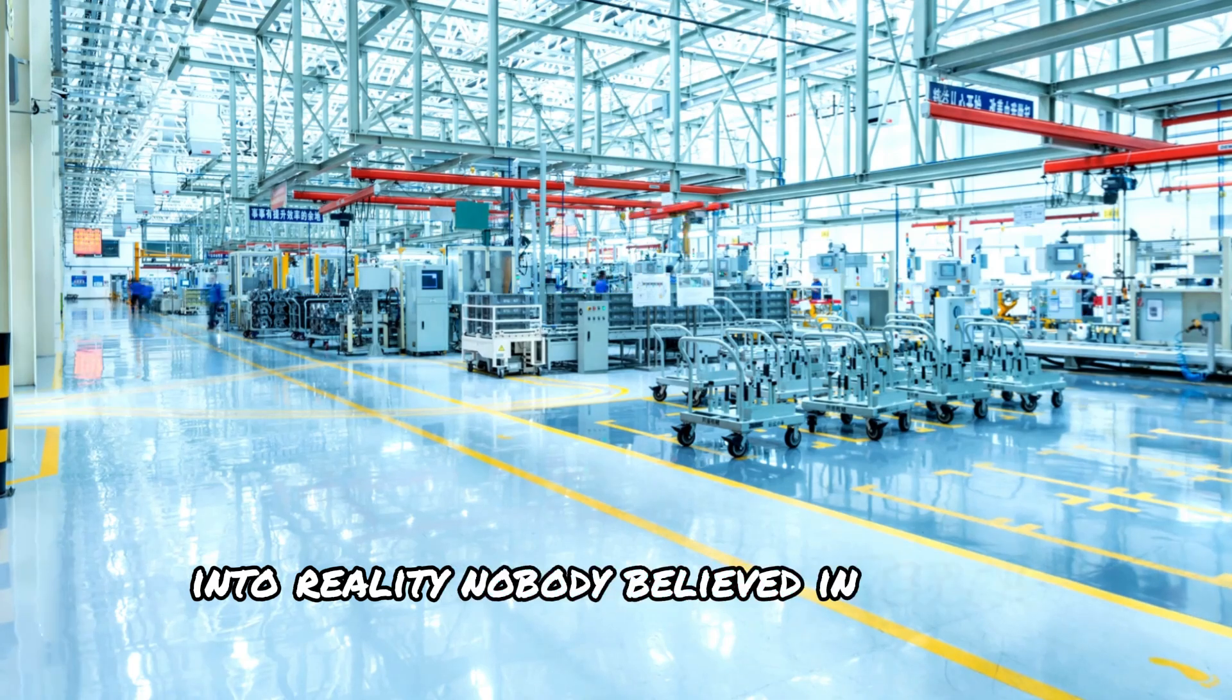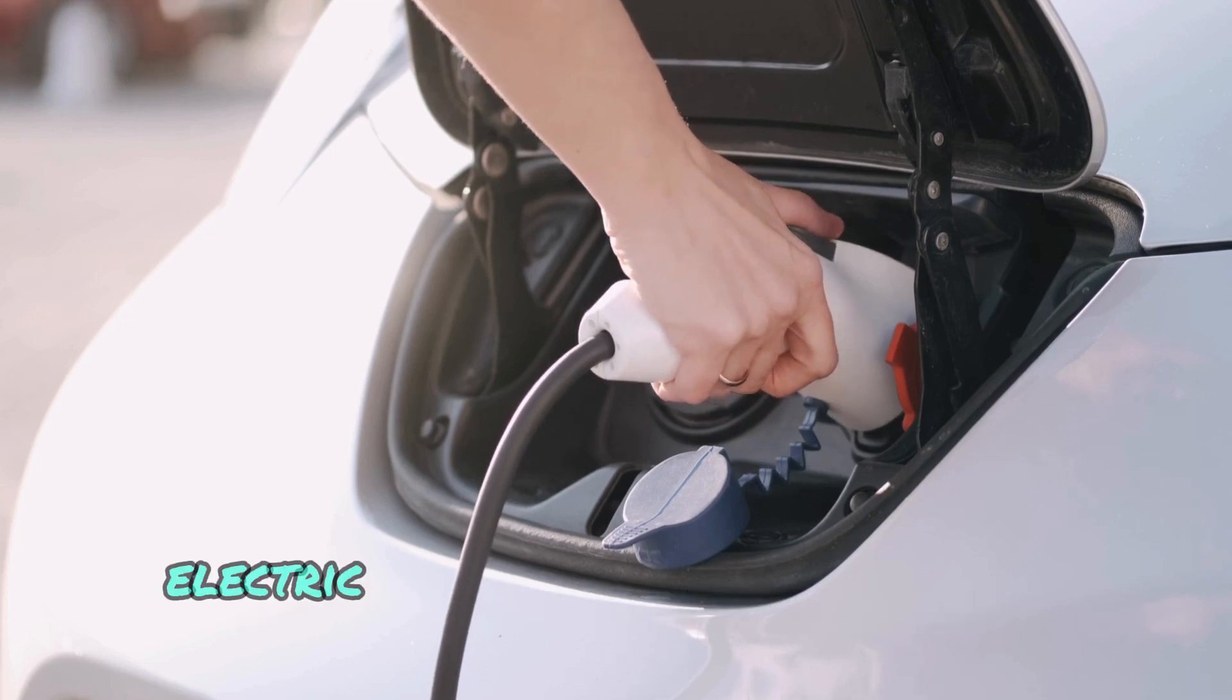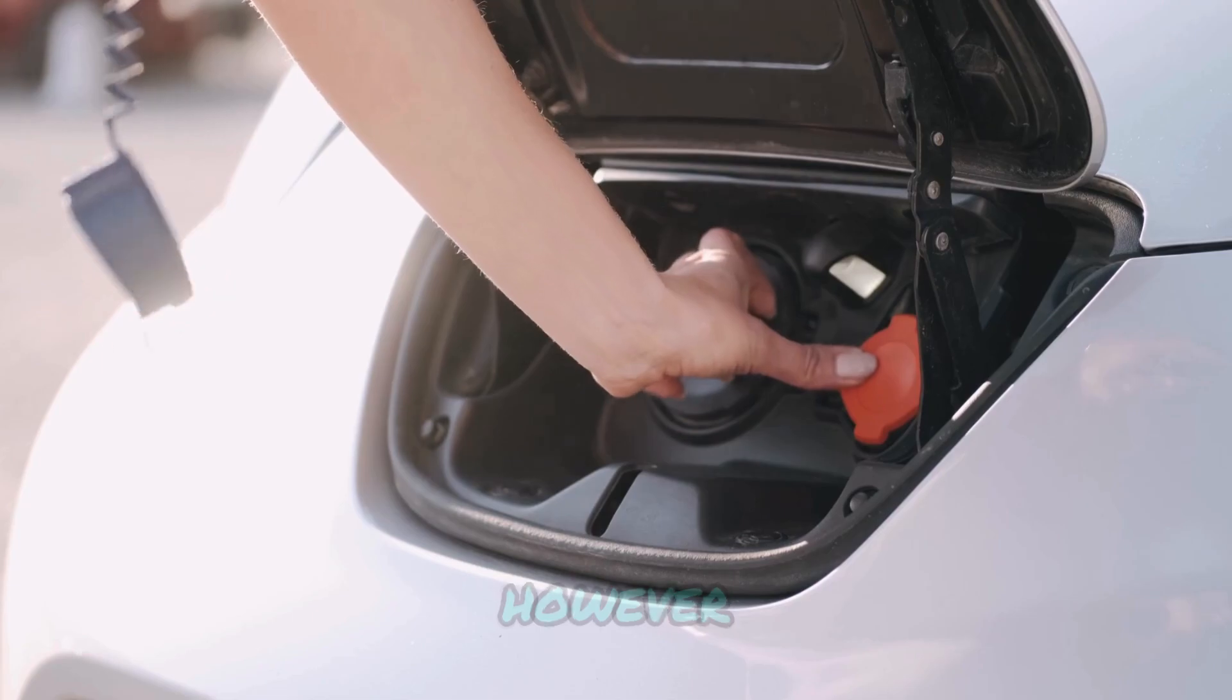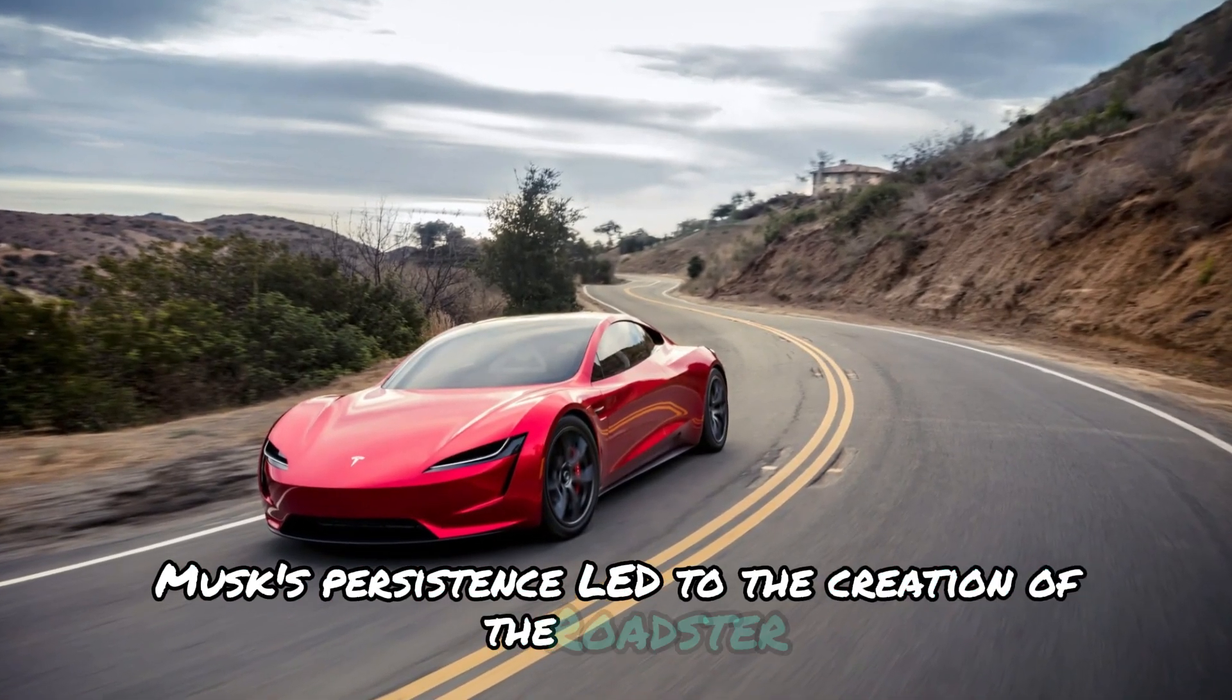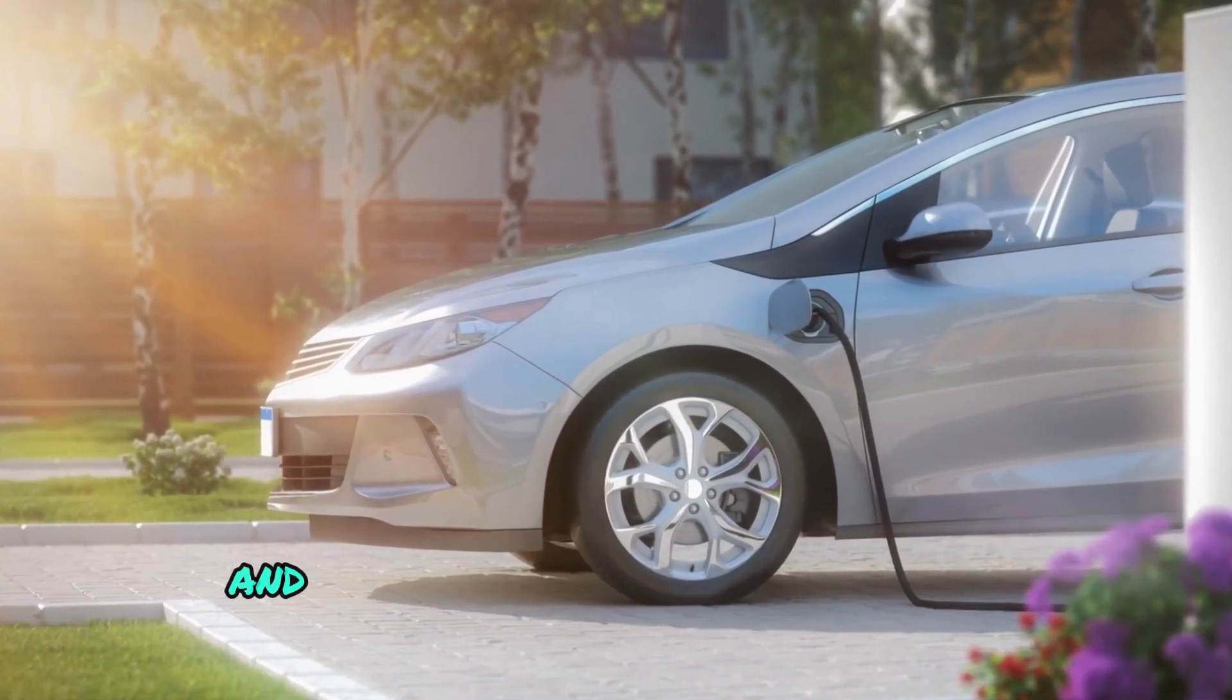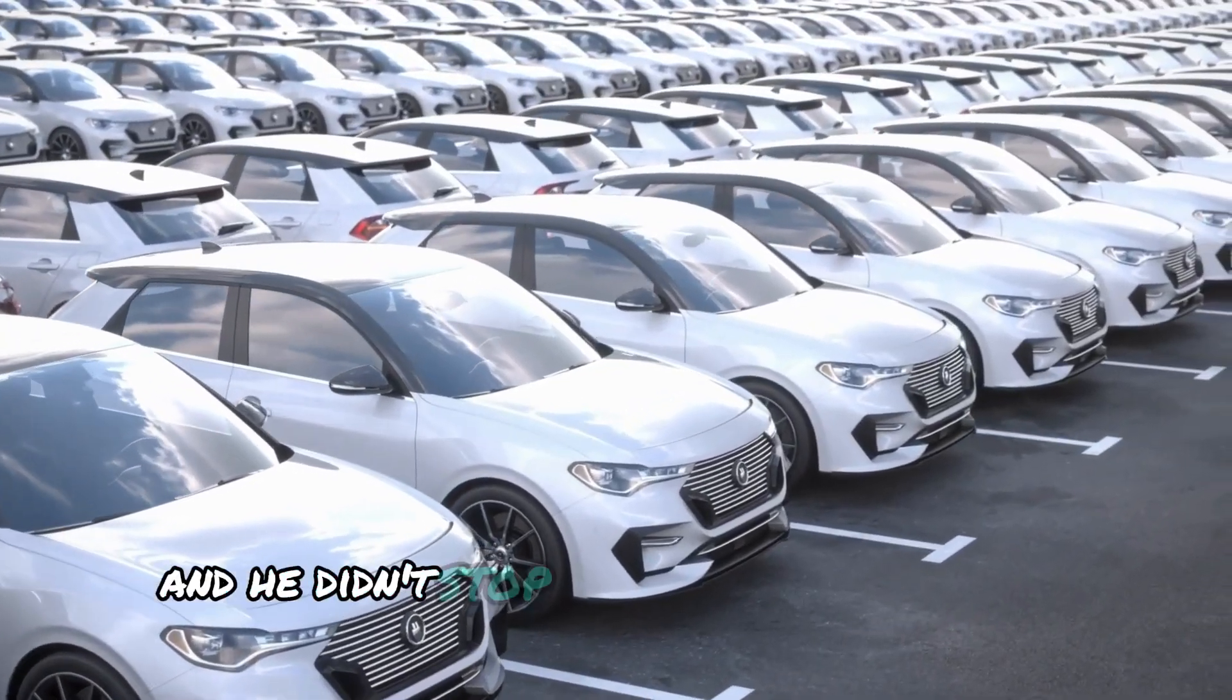Nobody believed in Tesla's vision when it started in 2003. Back then, electric vehicles were widely viewed as impractical. However, Musk's persistence led to the creation of the Roadster, a high-performance electric car that defied expectations and demonstrated the potential of electric mobility. And he didn't stop there.